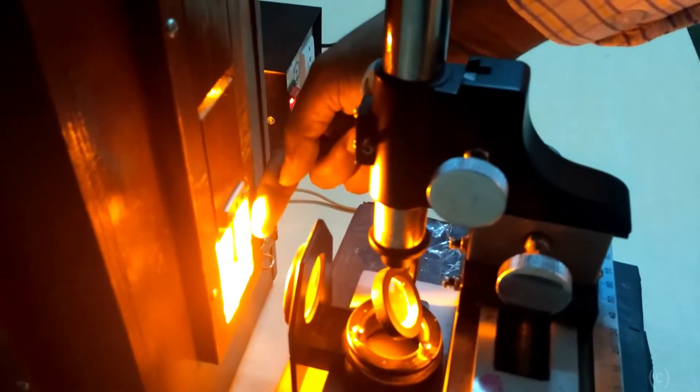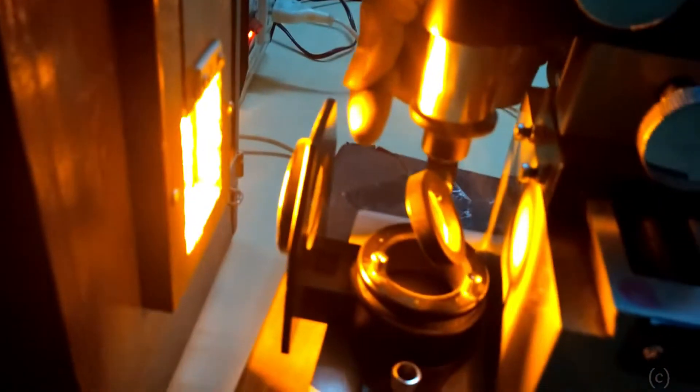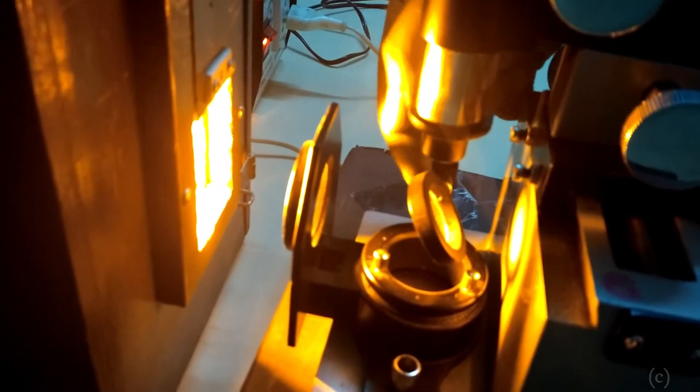Light comes from this monochromatic source and it falls on this biconvex lens. From the biconvex lens, light falls on this plain glass plate which is inclined at 45 degrees angle with the horizontal direction.